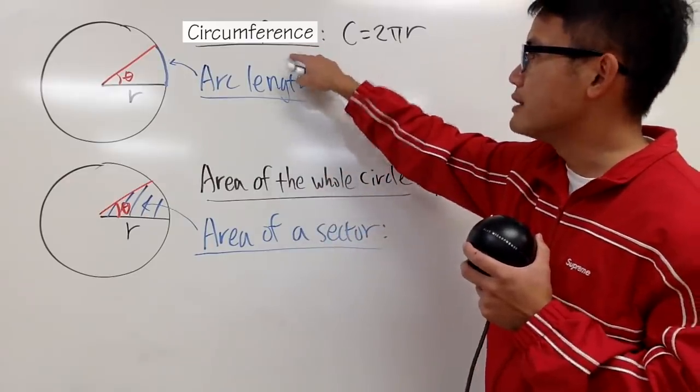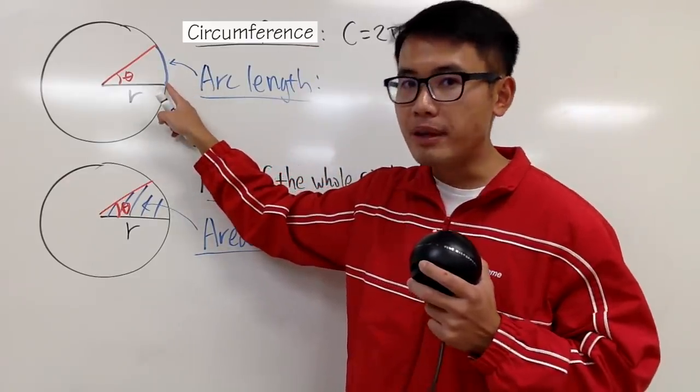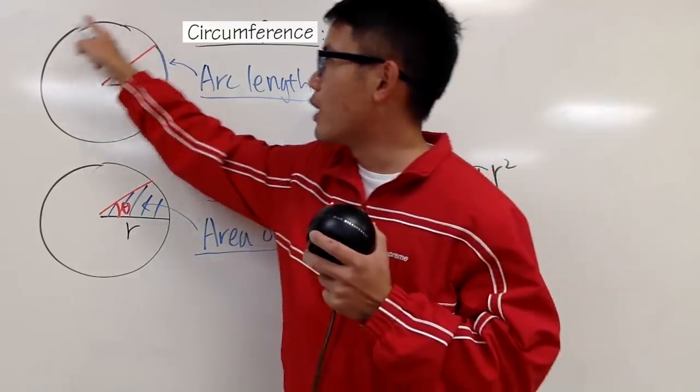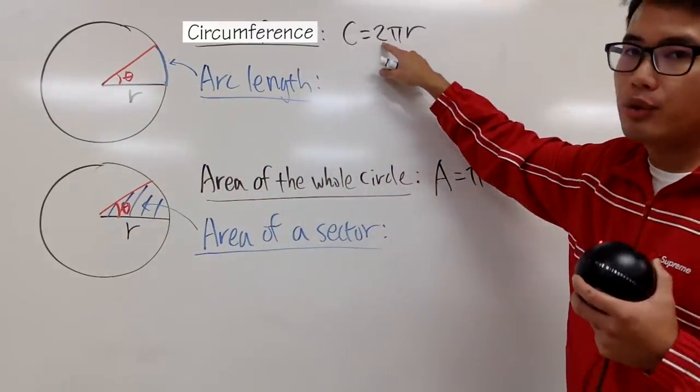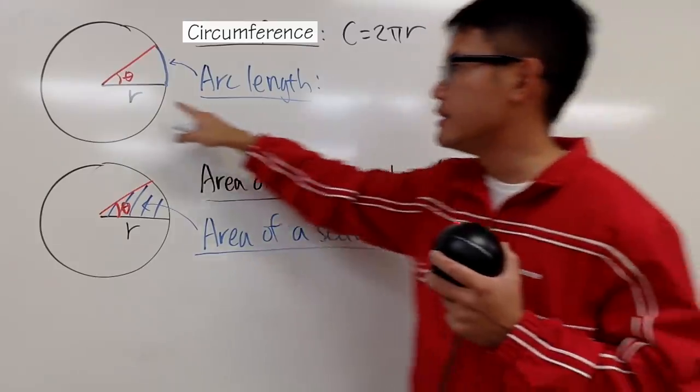Well, we know the circumference means that if you just pick a point on a circle and go around one time, the whole length is given by 2πr, r is the radius.